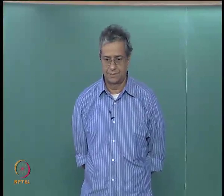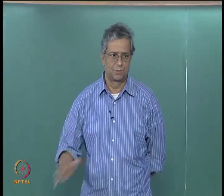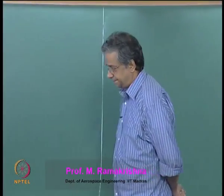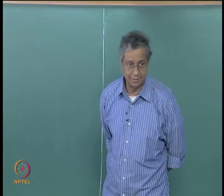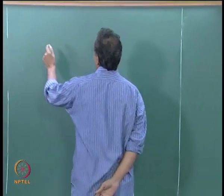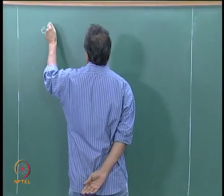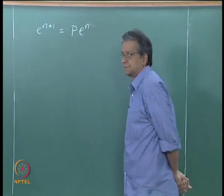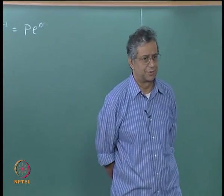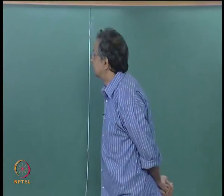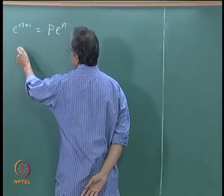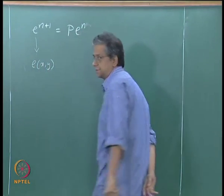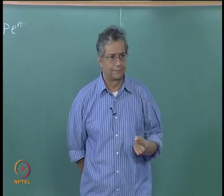Let me explain what we are trying to do now, just so that we get the context right. We know that the error in the solution e_{n+1} satisfies and is determined by this iteration equation. This error corresponds to a function e(x,y) which is the error in the original solution.